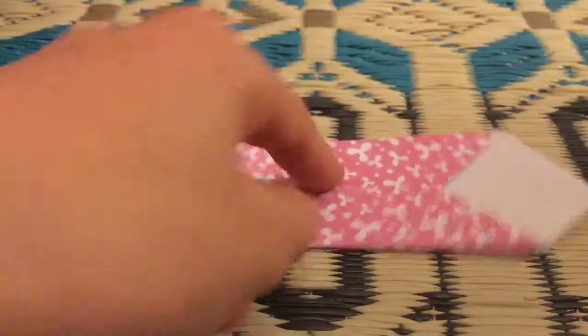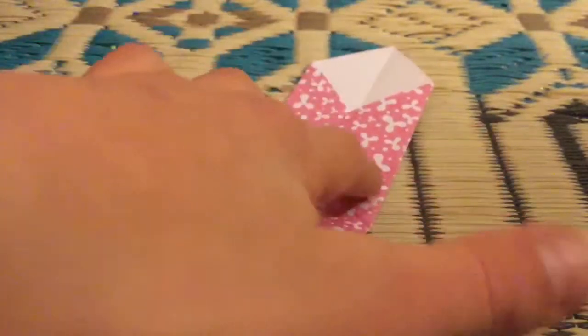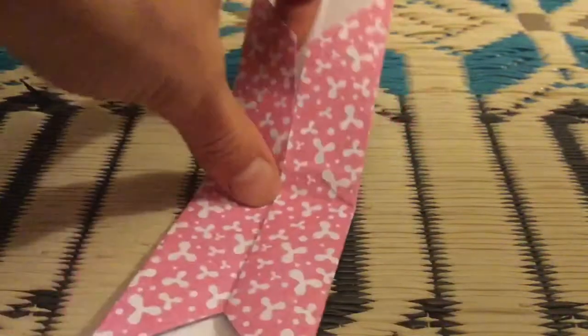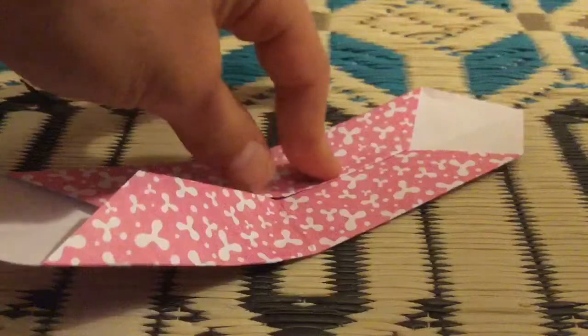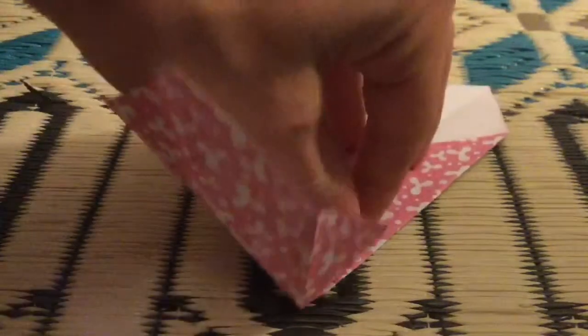Now you have a crease in the middle. And you're going to take this, you're going to find two, you're going to pick a side and find two tabs. Take one of the tabs, and take the edge of the tab, and fold it to that line.